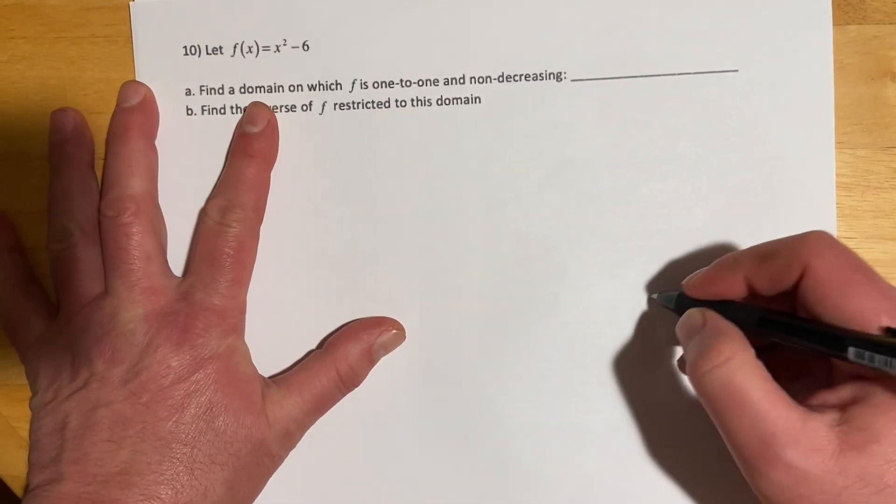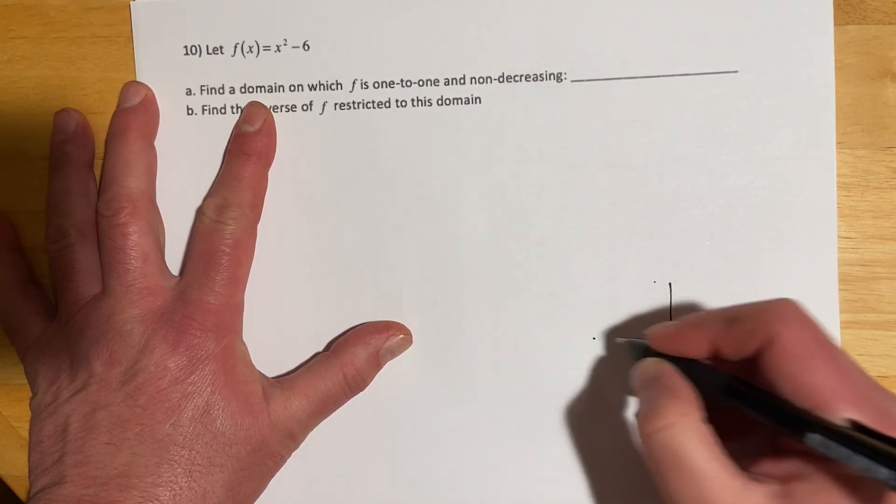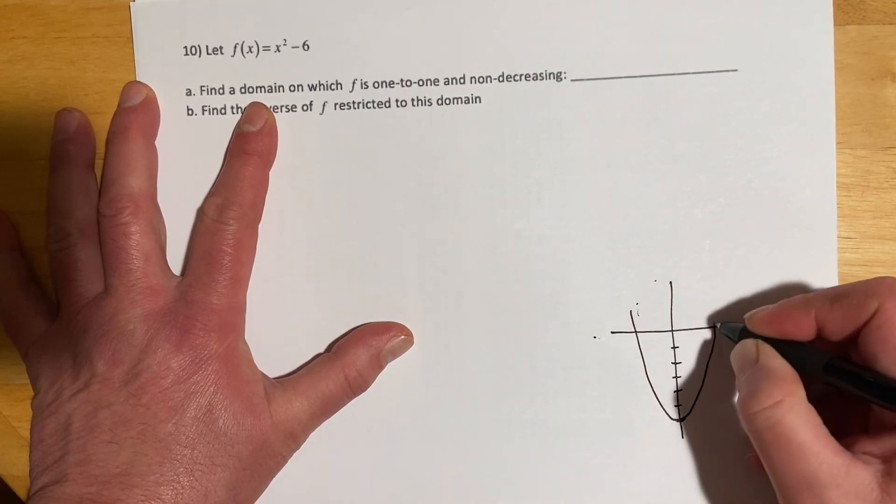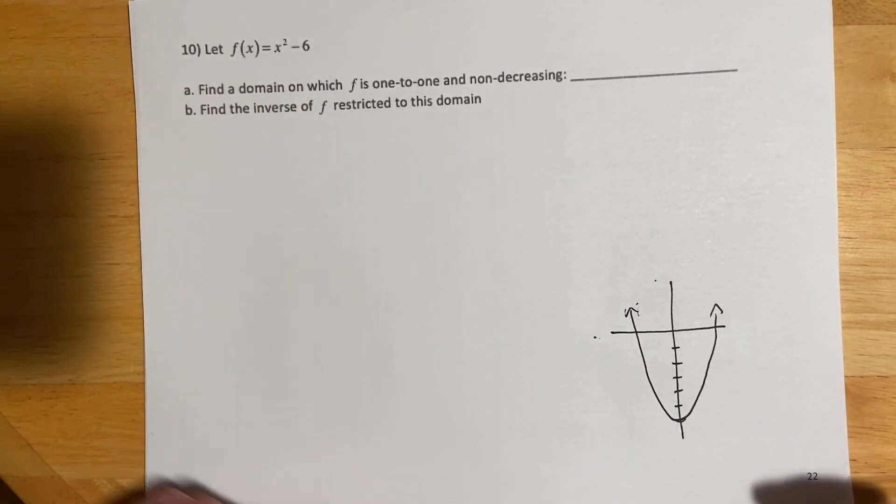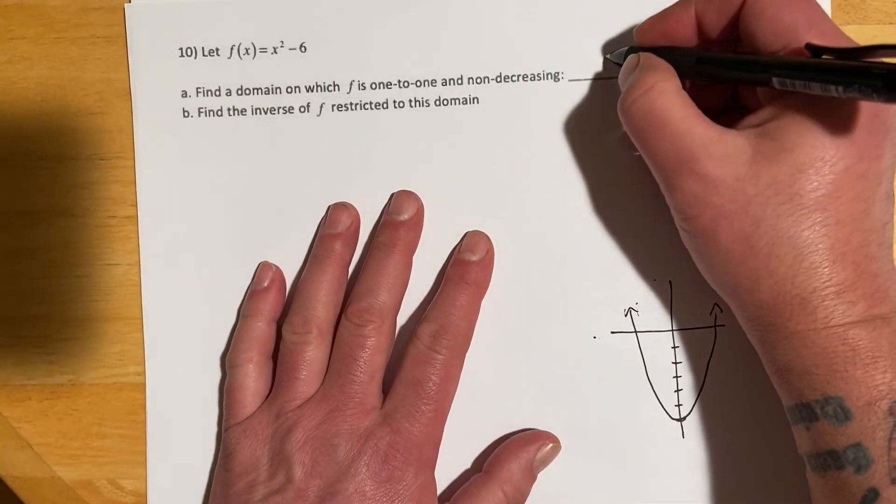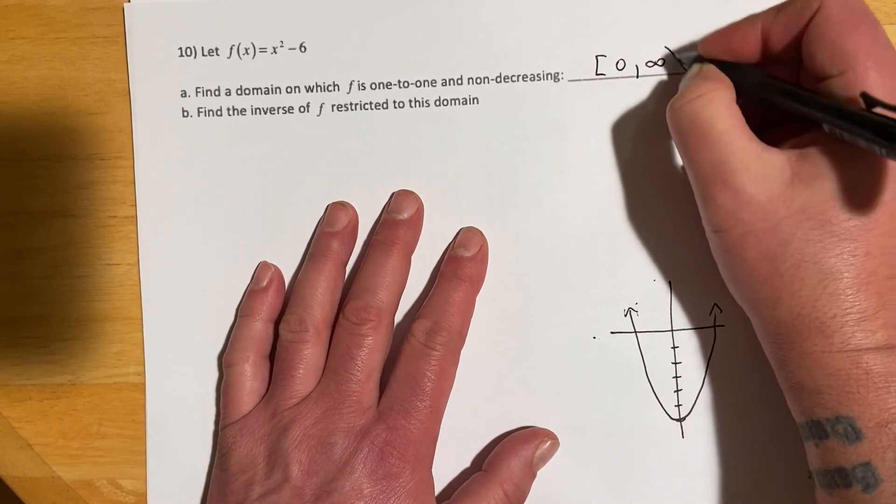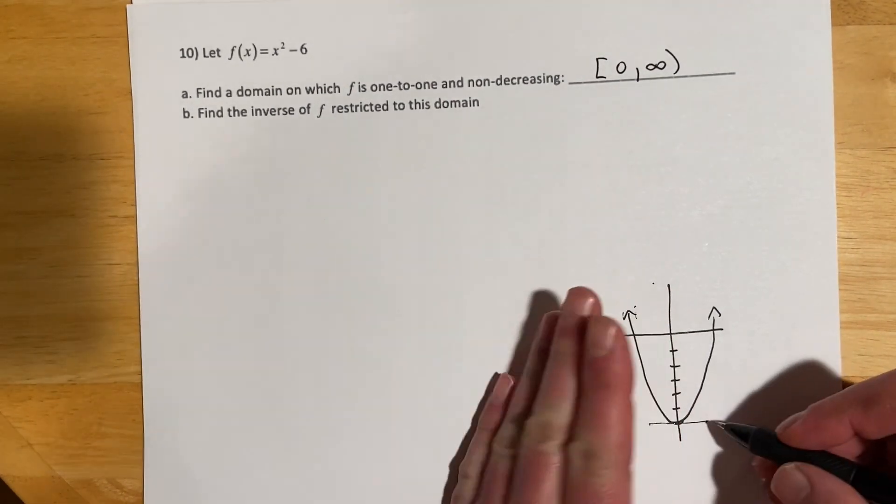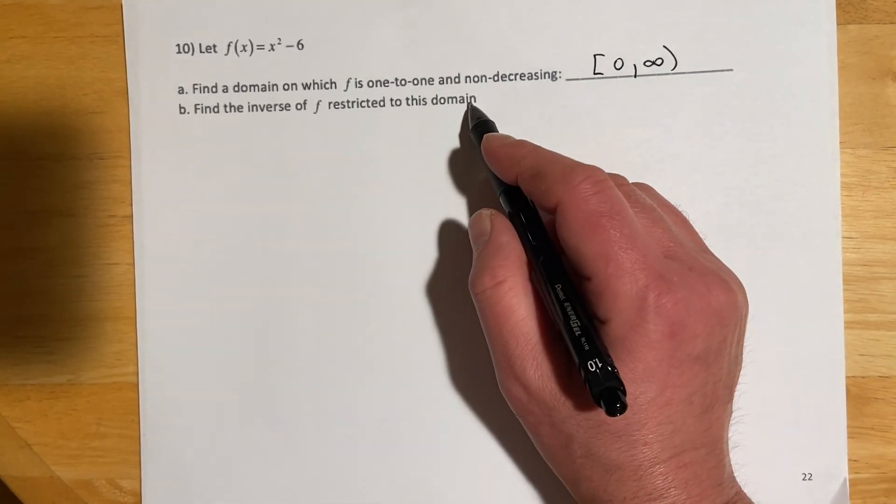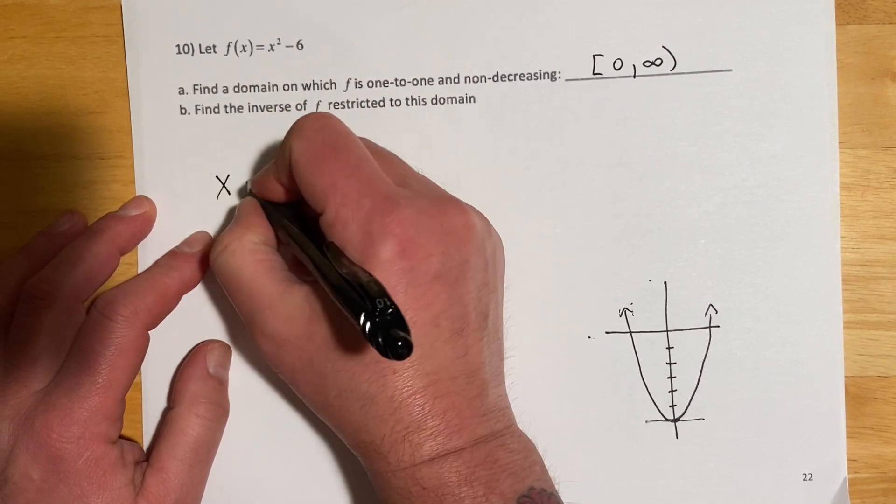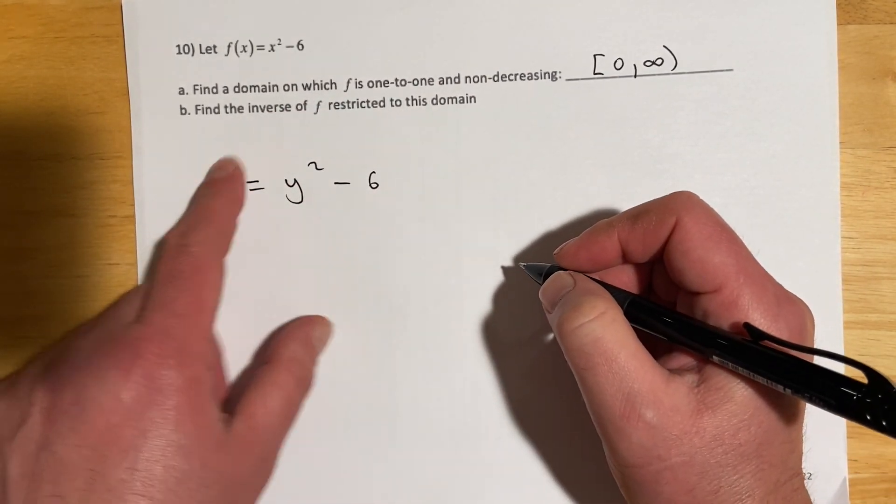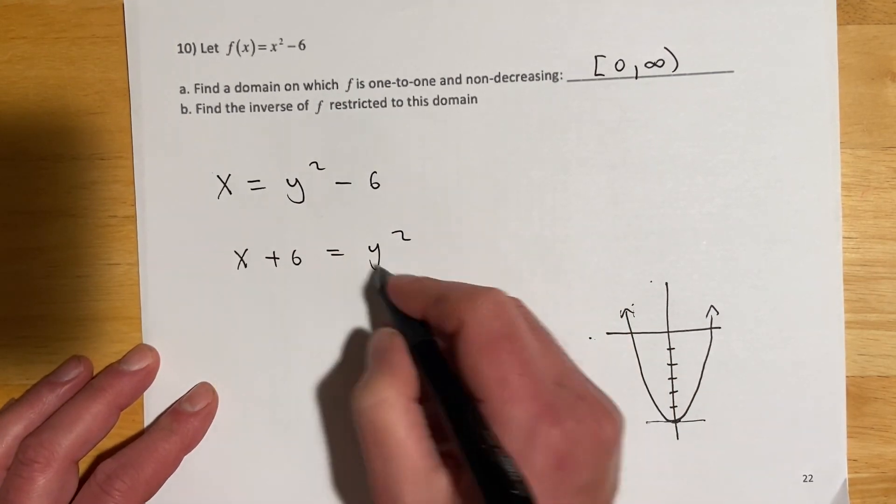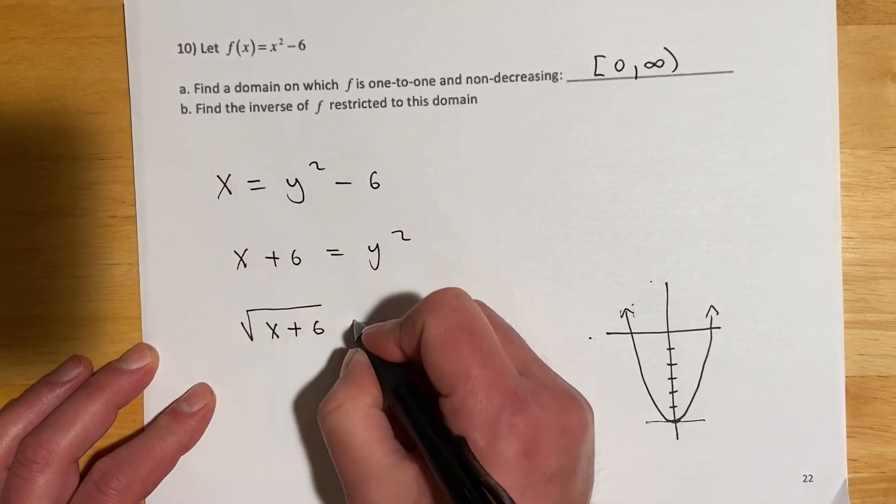This last one's the same directions. As I'm kind of thinking of what the graph would look like, this would be shifted down 6 units, still x squared. So the domain in which this is 1 to 1 and non-decreasing, this time it's going to be 0 to infinity. I'm including the 0 because at that point it's technically 0. The slope, it's neither increasing or decreasing, and then going to infinity, so the slope is ever increasing there. This will be x equals y squared minus 6. This time we want to get the 6 over before we do the root. I'm going to isolate the square, so x plus 6 equals y squared, and then root both sides. So square root x plus 6 equals y.